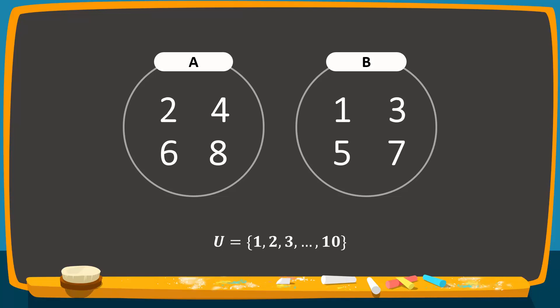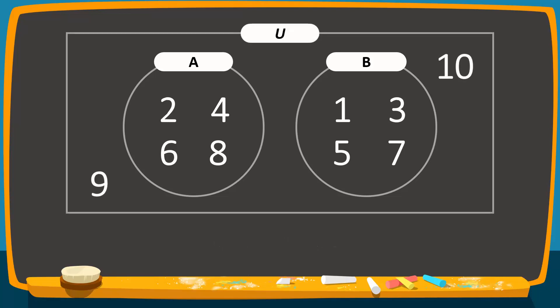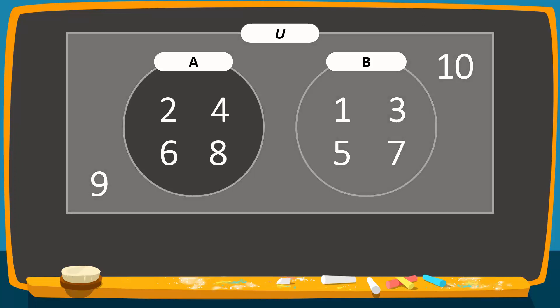Since both sets A and B are subsets of U, we can draw the circles of A and B lying inside the large rectangle of U. Observe that 9 and 10 are lying outside sets A and B. A complement will contain all the elements in the universal set that are not in set A.